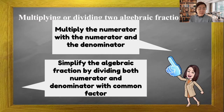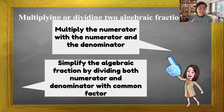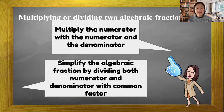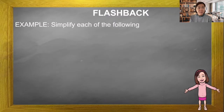Remember when we need to multiply or divide two algebraic fractions: for multiplications, multiply the numerator with the numerator and the denominator with the denominator. After that, we simplify the algebraic fractions by dividing both numerator and denominator with the common factor. So let's do a flashback.